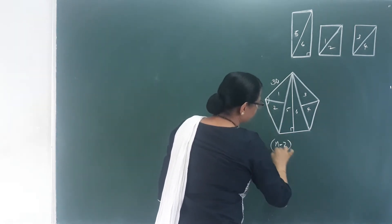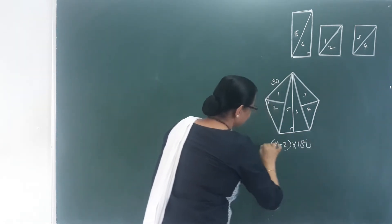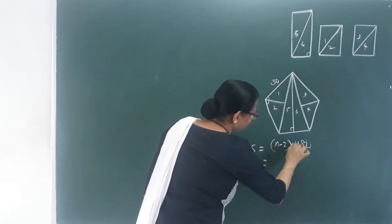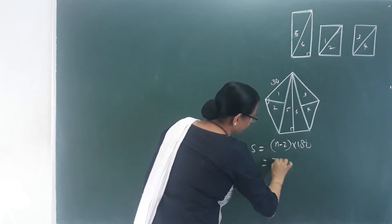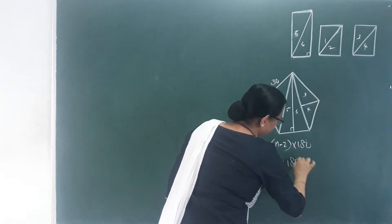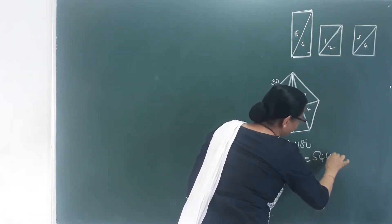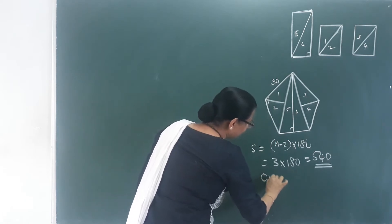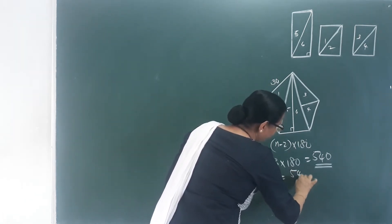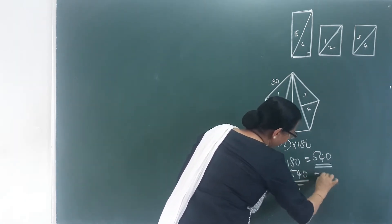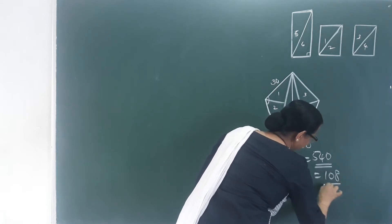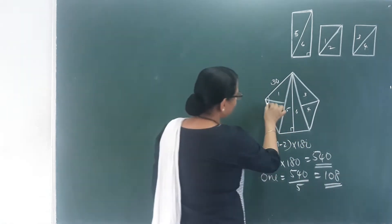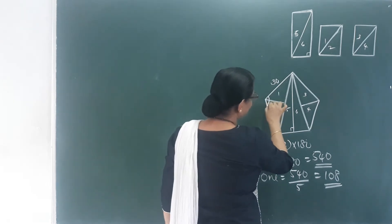The total sum of interior angles equals 5 minus 2, that is 3 into 180, which equals 540 degrees. Each interior angle is 540 divided by 5, which gives 108 degrees. So this angle is 108 degrees.